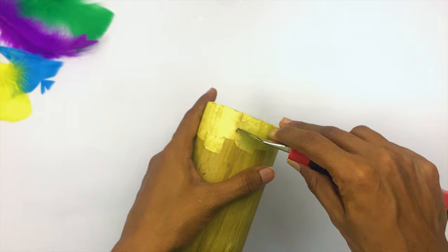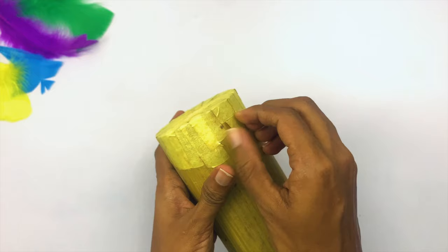After you've done that, you can take a sharp knife and score around the edge of the tape. Then you'll be able to peel the tape off to give it a nice straight edge.